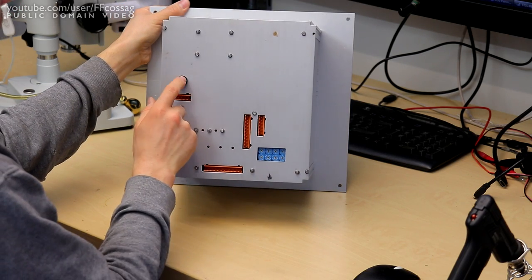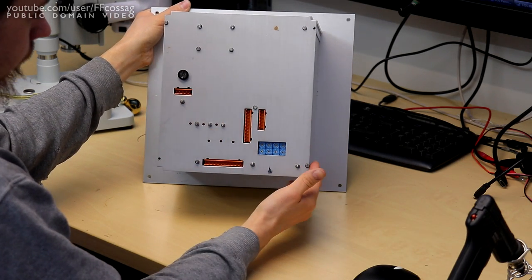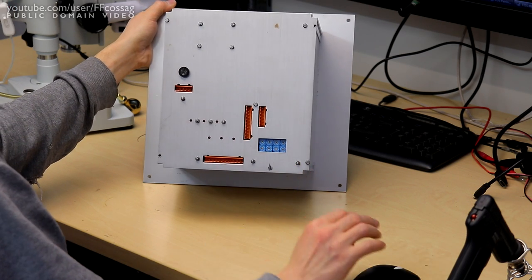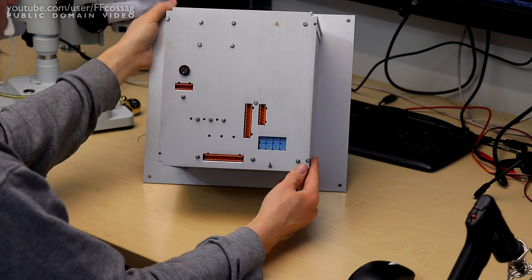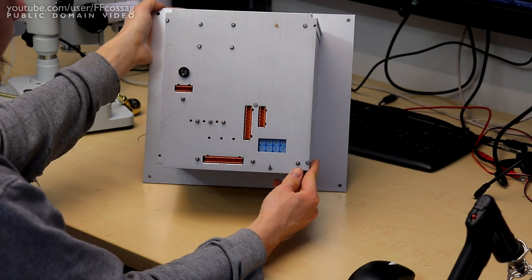This means the thing cannot calibrate itself and it's basically useless. You can run it manually, but that's not why you buy a really expensive metal bending machine - you buy it for the automatics.